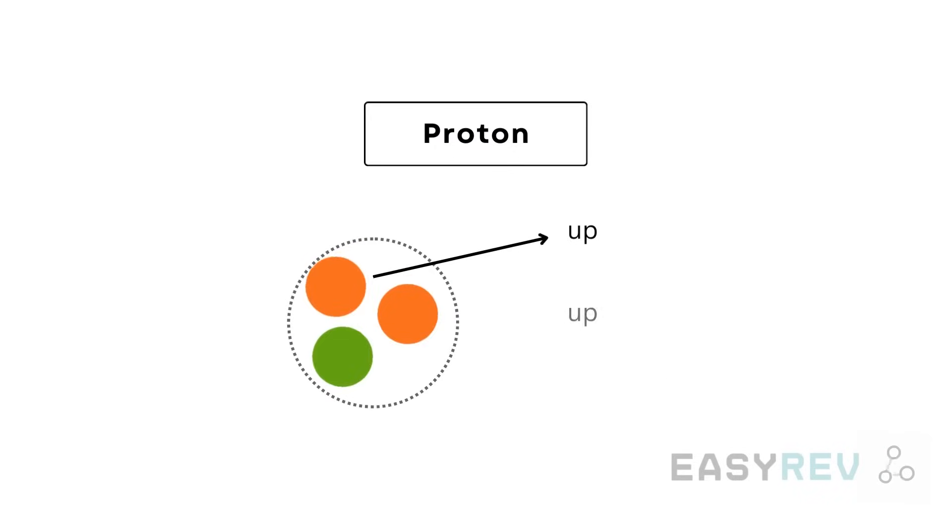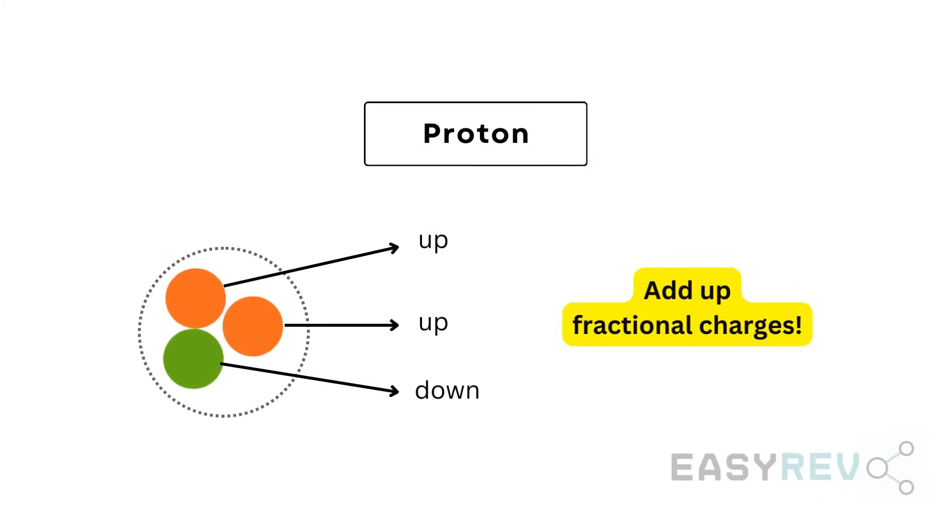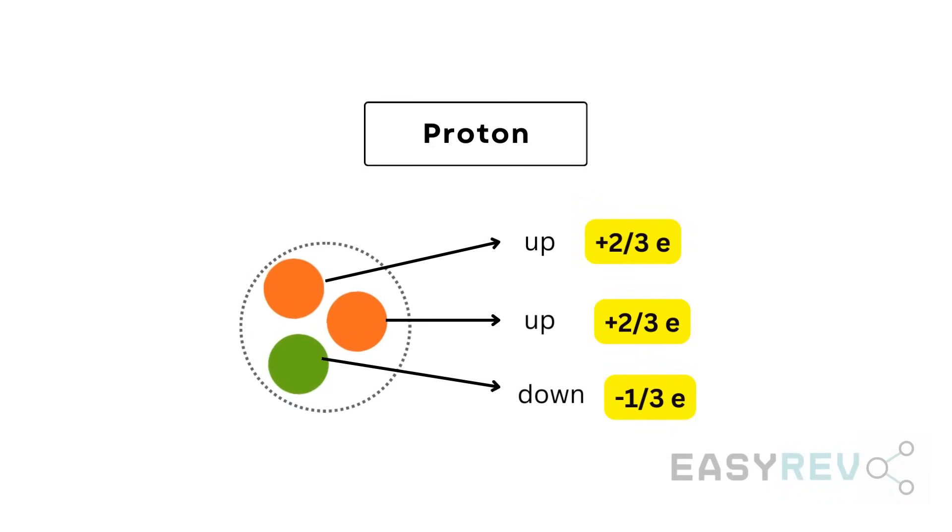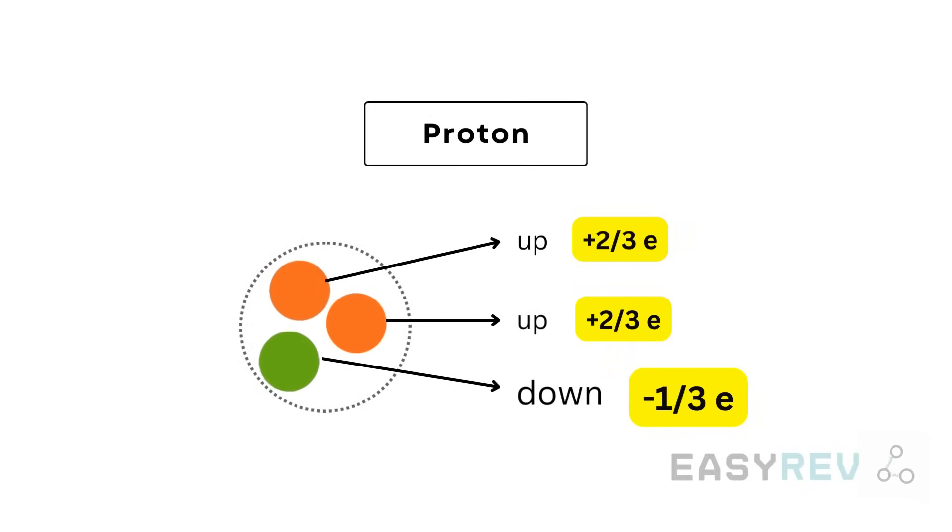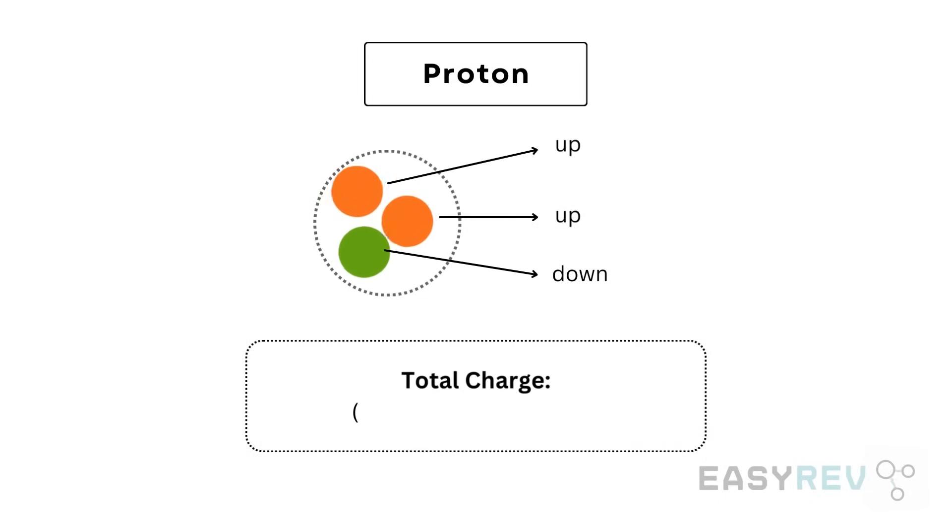Protons are made up of two up and one down quarks. We can verify that this quark composition works by just adding up all of the fractional charges. We know that the charge of the up quark is plus two over three times e. And the charge of a down quark is minus one over three times e. Add up their fractional charges and you get a value that's equal to the charge of one proton, which is plus one times e.